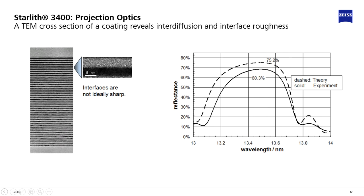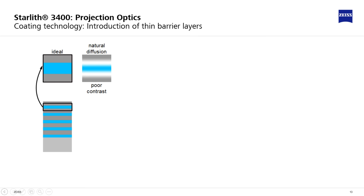Interdiffusion and roughness effectively reduce the contrast of refractive index, causing a reduction of the peak reflectance and the width of the back peak. One of the means to increase the index contrast at the interfaces between the high and low index material is the introduction of thin barrier layers.